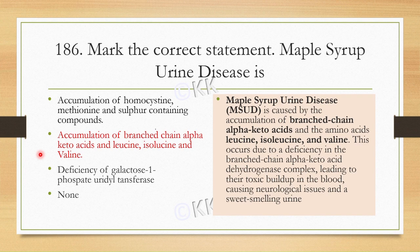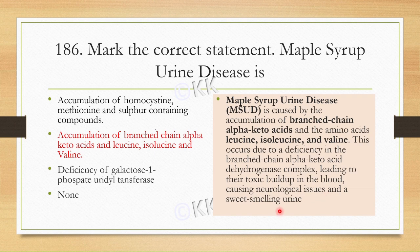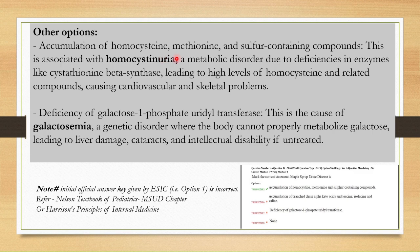Maple Syrup Urine Disease (MSUD) is caused by accumulation of branched-chain alpha-ketoacids and amino acids like leucine, isoleucine, and valine. This is mainly due to absence or deficiency of the dehydrogenase complex — the enzyme responsible for breakdown of alpha-ketoacids — leading to toxic build-up in blood, neurological issues, and sweet-smelling urine. Option A's homocysteine and methionine are associated with homocystinuria. Option C — deficiency of galactose-1-phosphate uridyl transferase — can cause galactosemia, which may further cause liver damage, cataracts, and intellectual disability.